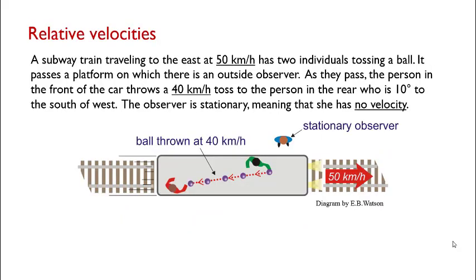Let us return to the idea of relative motion where a stationary observer looks on to a more complicated system where more than one thing is in motion. Imagine that we're viewing a subway car that is moving 50 kilometers per hour to the east. In it two individuals are tossing a ball back and forth.